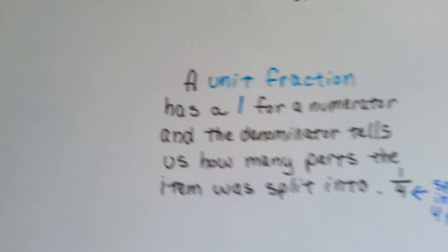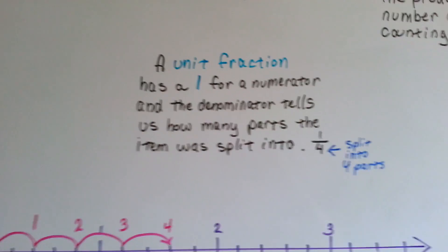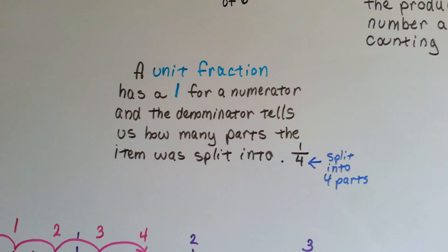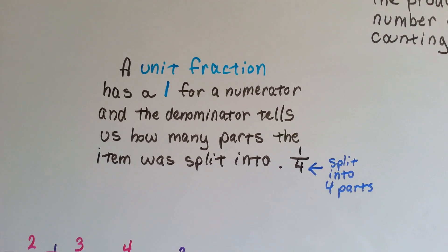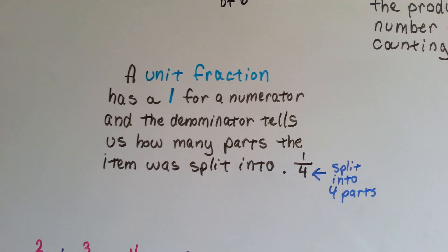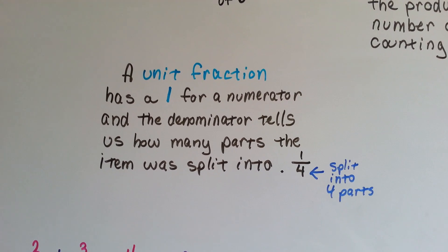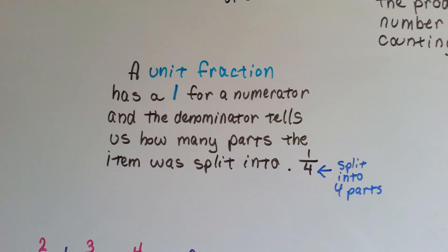If you also remember, a unit fraction has a 1 for a numerator, and the denominator tells us how many parts the item was split into. So a unit fraction of 1 fourth has a 1 for a numerator, and the 4 tells us that the item was split into 4 parts.